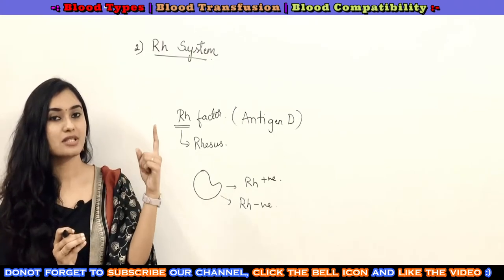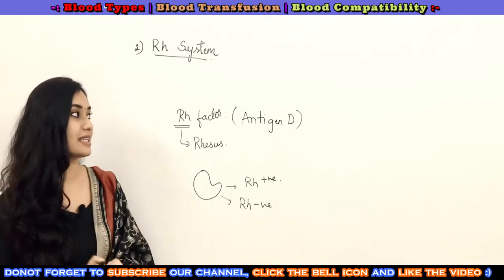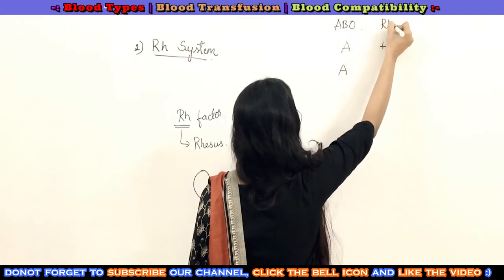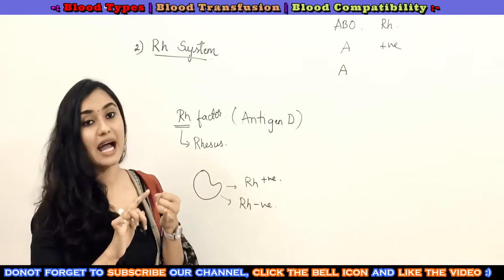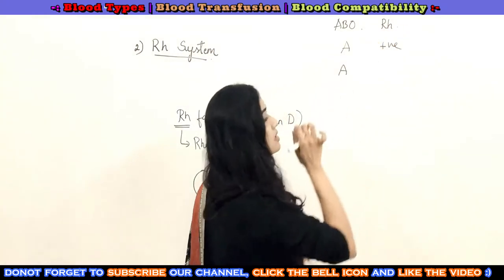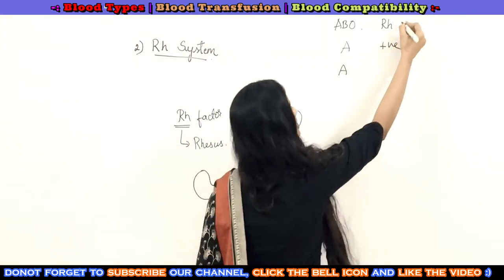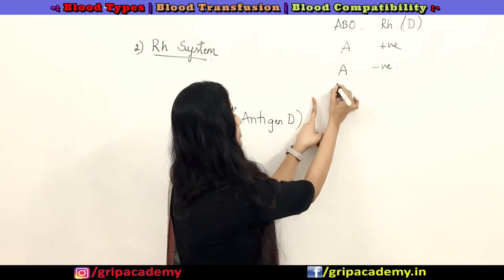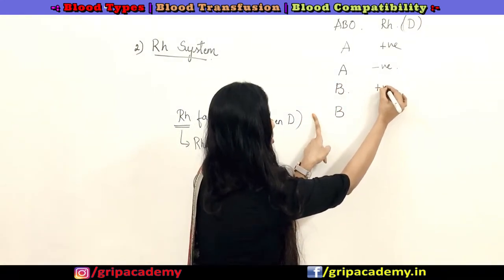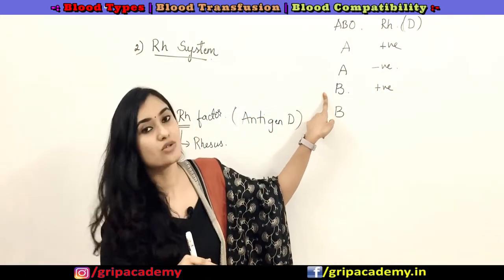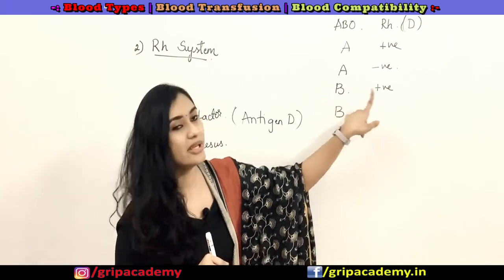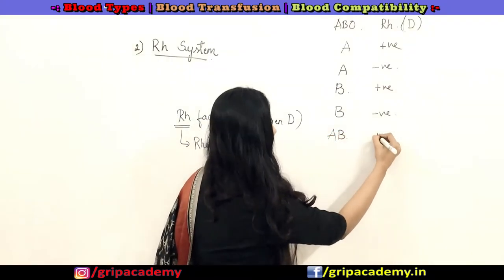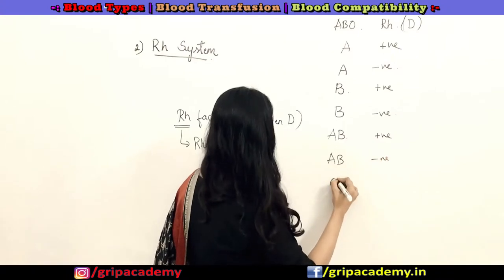If antigen D is absent on the surface of RBC cells, you call it Rh negative. Based on this, we have classified blood groups into eight types: A positive, A negative, B positive, B negative, AB positive, AB negative, O positive, and O negative. In the ABO system, the presence or absence of antigen A and antigen B matters, while in the Rh system, the presence or absence of antigen D matters.